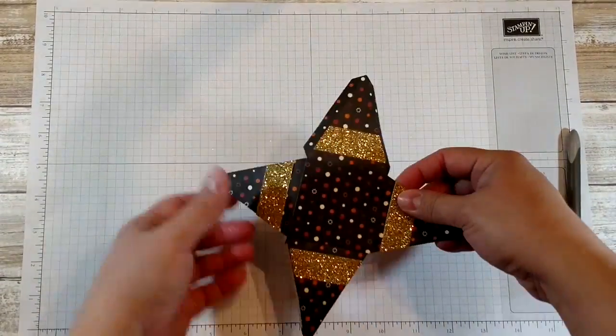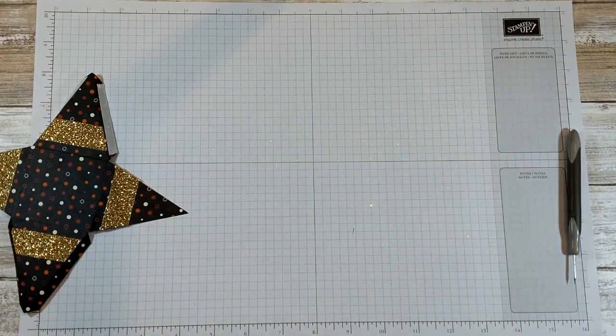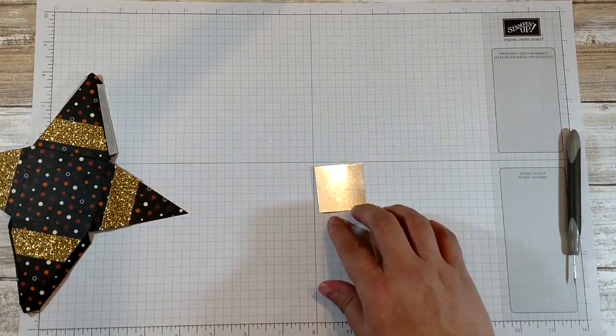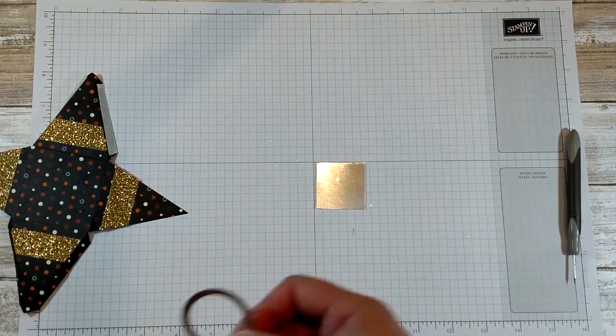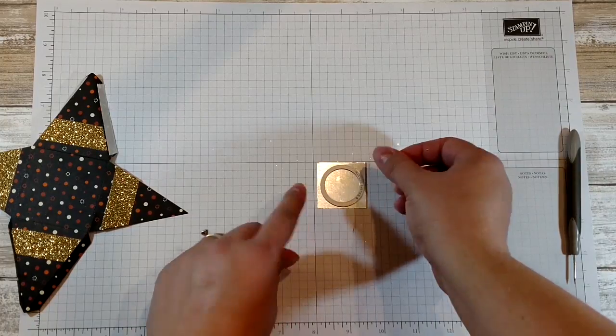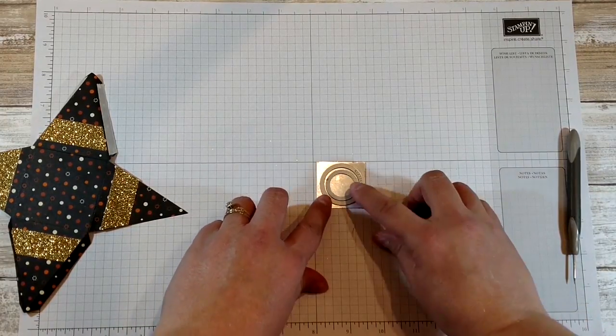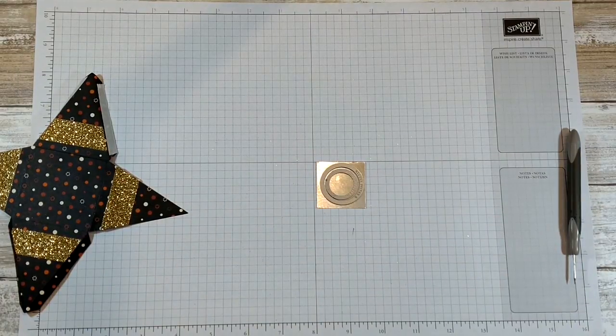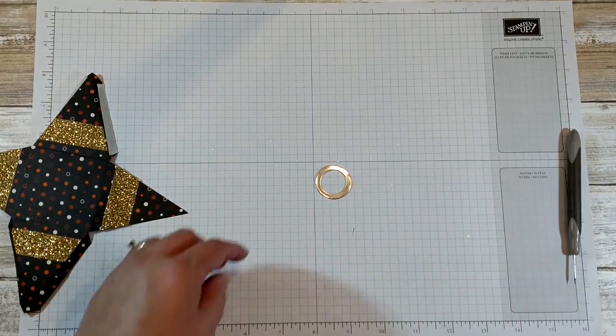Oh, almost. I almost forgot the cute little buckle. What you're going to do is take a one and a half inch by one and a half inch piece of silver foil paper and you're going to take about a one and an eighth inch circle and place it right in the center and take about a three quarter inch circle die and put it right in the middle. Once you've got those right where you need them, you run them through your die cutting machine and you'll come out with this cute little buckle here.